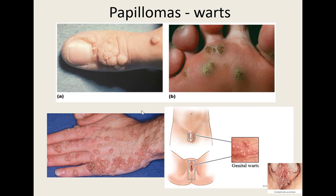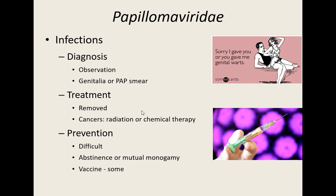Diagnosing warts can be quite easy because they're very visual. If it's a genital wart, they may do a pap smear to see it. Treatment: there are lots of ways to remove a wart — over-the-counter chemicals, freezing, drying, or heat. If it does cause cancer, you'd need cancer treatment such as radiation or chemotherapy. Prevention is difficult because of the many strains and how easily it spreads through inanimate objects. Abstinence and mutual monogamy can help stop the spread of genital warts.